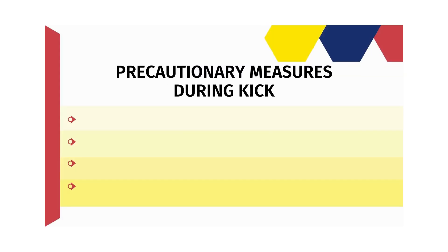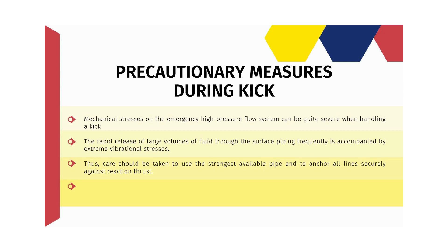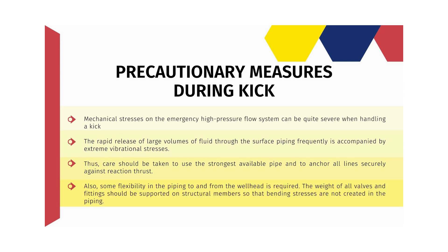Mechanical stresses on the emergency high-pressure flow system can be quite severe when handling a kick. The rapid release of large volumes of fluid through the surface piping frequently is accompanied by extreme vibrational stresses. Care should be taken to use the strongest available pipe and to anchor all lines securely against reaction thrust. Some flexibility in the piping to and from the wellhead is required, and the weight of all valves and fittings should be supported on structural members so that bending stresses are not created in the piping.